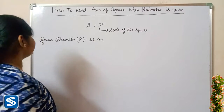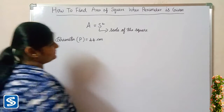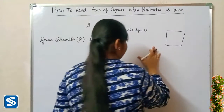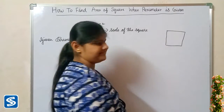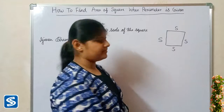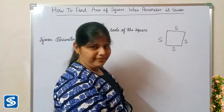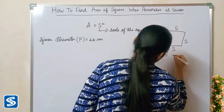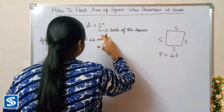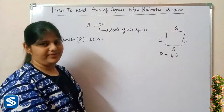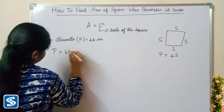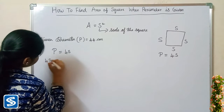For example, we can take: given perimeter P is equal to 44 centimeters. We already know that a square has four equal sides, so to find the perimeter of a square we use the formula: perimeter P is equal to 4S. Here the perimeter is 44 centimeters, so now we have to substitute this value in this formula to find the side of the square.